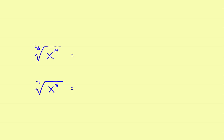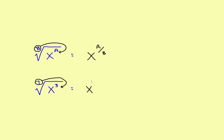The rule is like this: if you have the b-th root of x to the a power, take the b root and move it to the denominator. So this turns into x to the a over b power. As a specific example, take the seventh root of x cubed — you take the 7 and move it to the denominator, so this becomes x to the 3 sevenths power. With that in mind, let's work a couple of examples using integration.